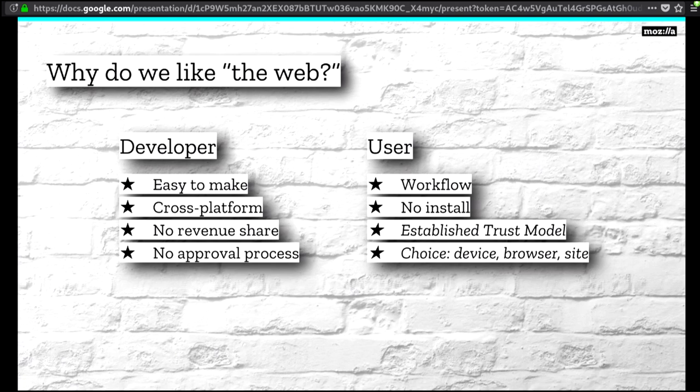And then also we have choice. There's a ton of choice on the internet. I can choose the device that I'm using — a desktop, a phone, any number of IoT devices. You can choose what browser, what sites you're using. This choice is really paramount to what the web is. But the web is not the only model that's extremely successful right now. There are other models out there, and I think we need to examine them a little bit — because with all these great things, why would anyone choose anything different?